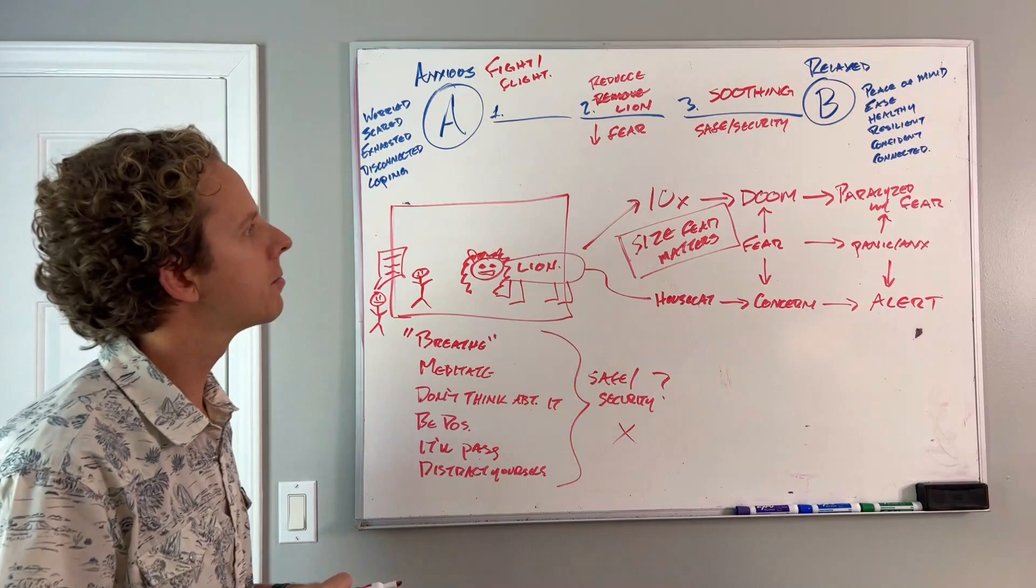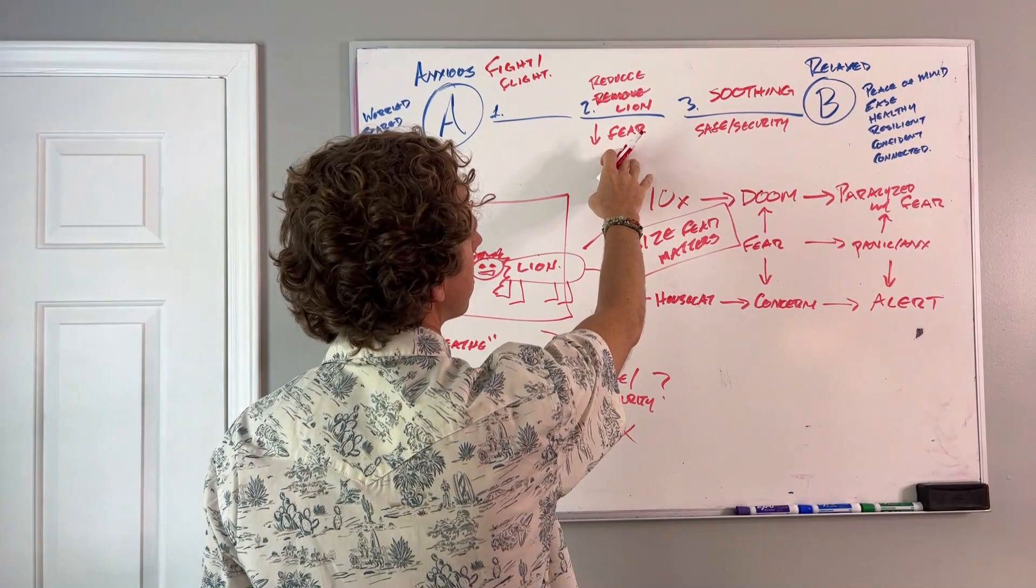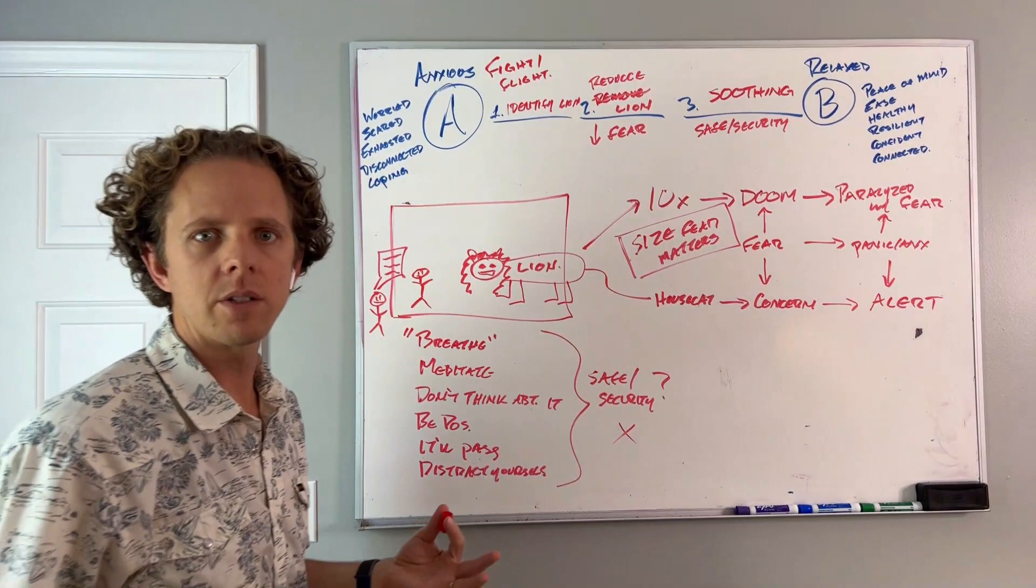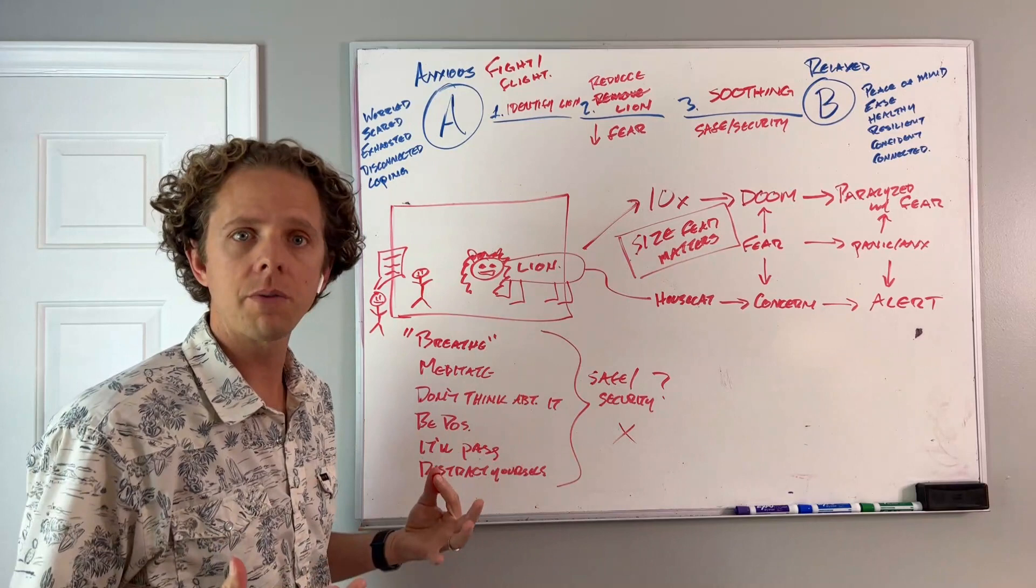We know that step two now is to reduce the size of the lion. Step one is going to be to actually identify what the lion is. Because your stress response is getting activated, but there isn't a big threat in your life right now. There's not a physical threat. Your body is not actually in danger.